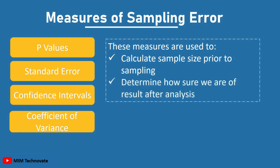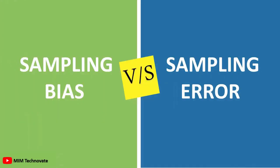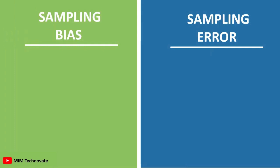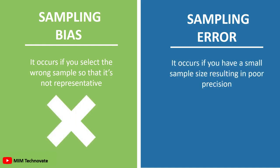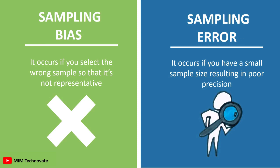Sampling bias versus sampling error: Sampling bias occurs if you select the wrong sample so that it is not representative of the population, whereas sampling error occurs if you have a small sample size, resulting in poor precision.